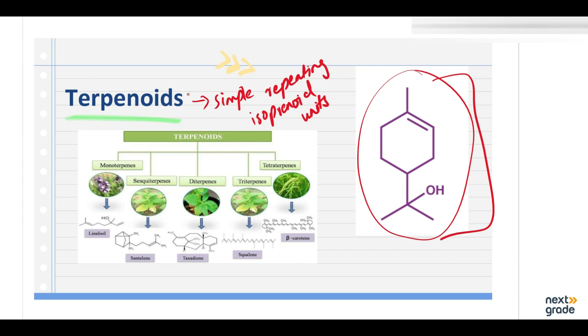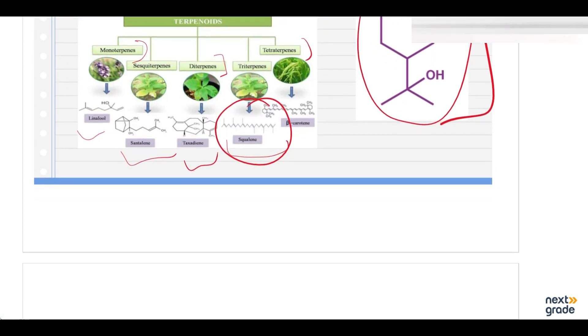Now you can see the terpenoids, they can exist. They give rise to some other compounds as well, such as rubber, and such as tetraterpenes, triterpenes, monoterpenes. These are their examples and some of their structures. Squalene. It is used in some of these skin products as well. It's a very nice terpenoid, a certain form of fatty acid and lipid.